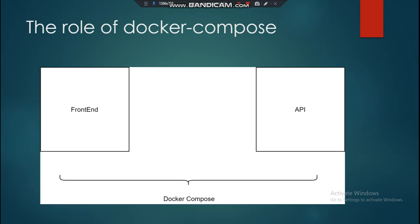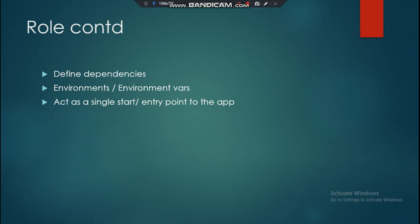In the Docker Compose file, we define all the microservices in our application architecture and the dependencies between them. We make a single entry point for the application through the Docker Compose file. In this example, the front-end is one microservice and the API is another microservice, and Docker Compose connects these microservices with each other. We also define dependencies, environment variables used by containers and container services.